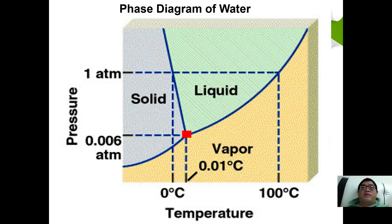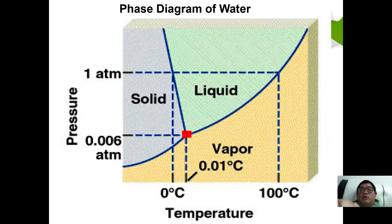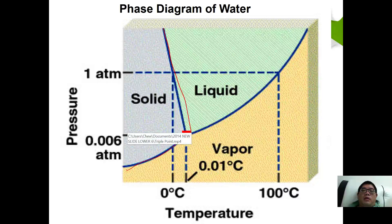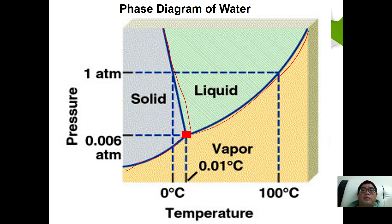So given to you, this is the phase diagram of water. In the phase diagram of water, you have this, which we call the sublimation curve. This one is the melting curve, and this is the vapor pressure curve. Everything beyond here exists as solid. Everything here exists in liquid, whereas below here all are gases.